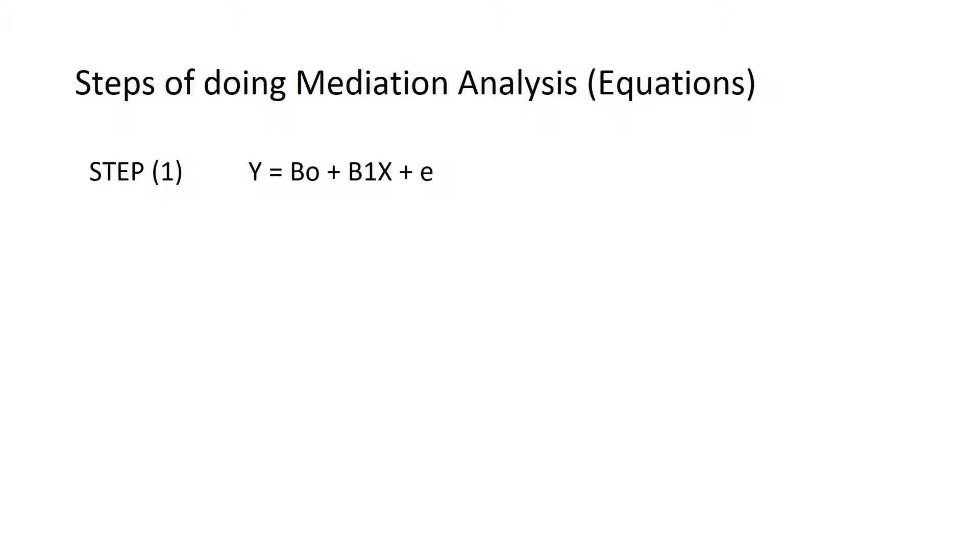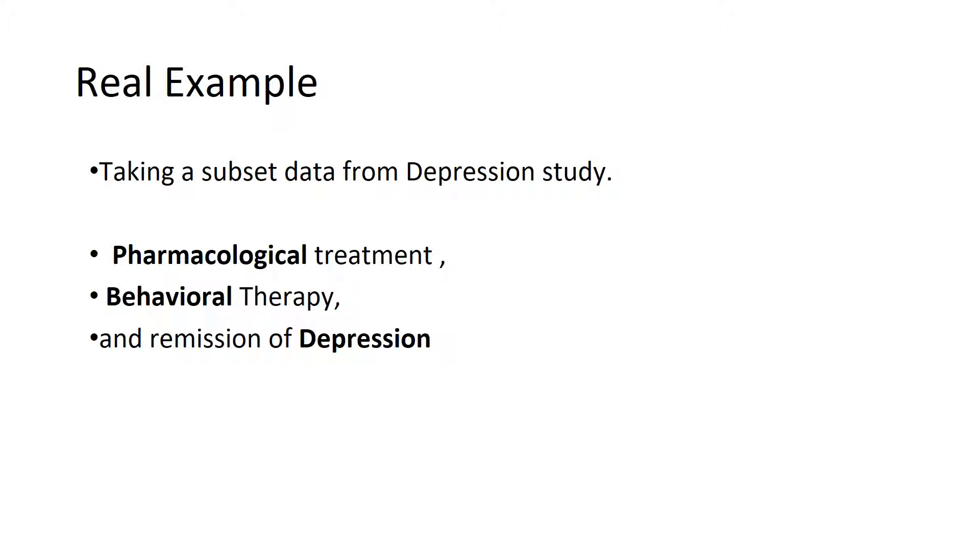Here we can see the arithmetic equations to calculate the regression of each pathway. This one is the first regression, where we regress outcome on exposure. This equation is the regression of mediator on exposure. This one is regressing outcome on mediator. And this is the fourth regression where we regress outcome on both exposure and mediator.